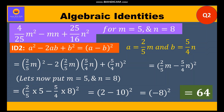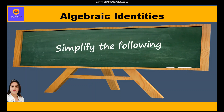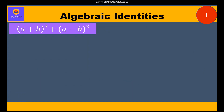So 64 is our final answer. Now let's simplify the following. Let us take the first part: (a+b)² + (a-b)².